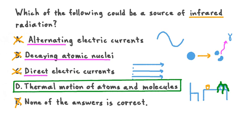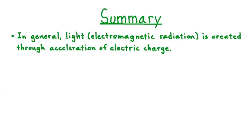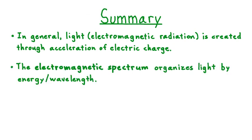Let's take a moment now to summarize what we've learned about the electromagnetic spectrum. In this lesson, we saw that, in general, light, which is another name for electromagnetic radiation, is created through the acceleration of electric charge. Often, this acceleration happens in the context of electron transition between energy levels of an atom. We saw that the electromagnetic spectrum organizes all the light that can be produced by the light's wavelength or, correspondingly, by its energy.